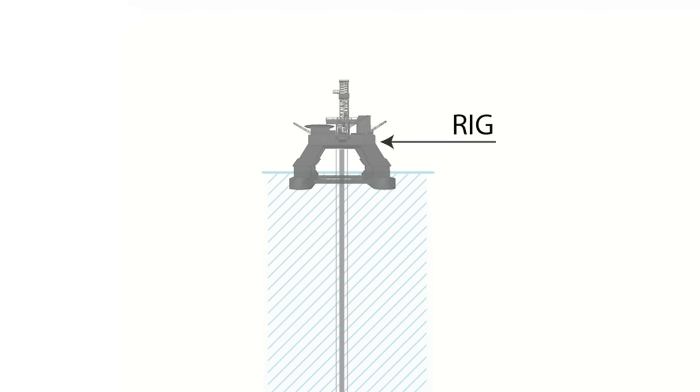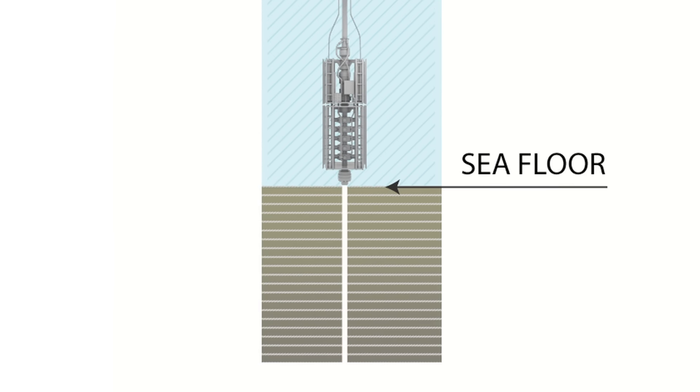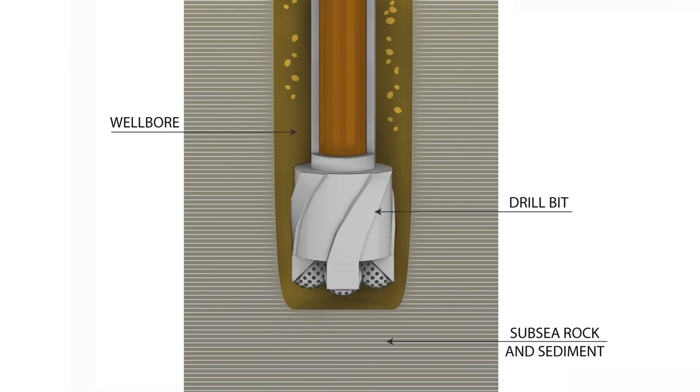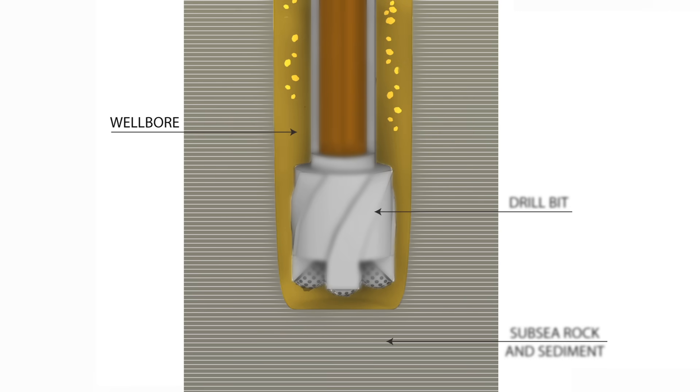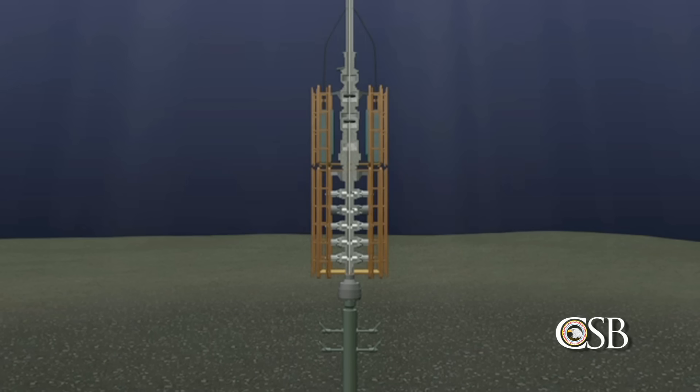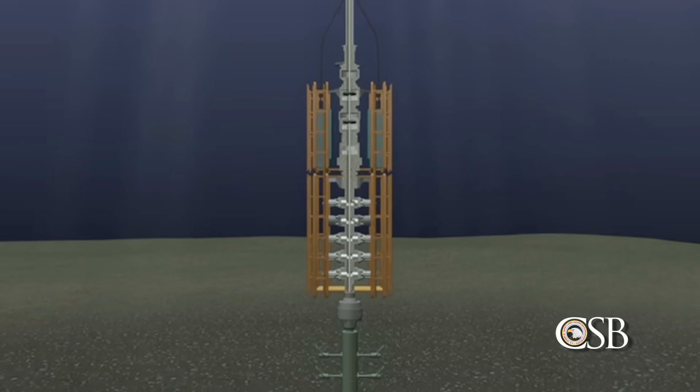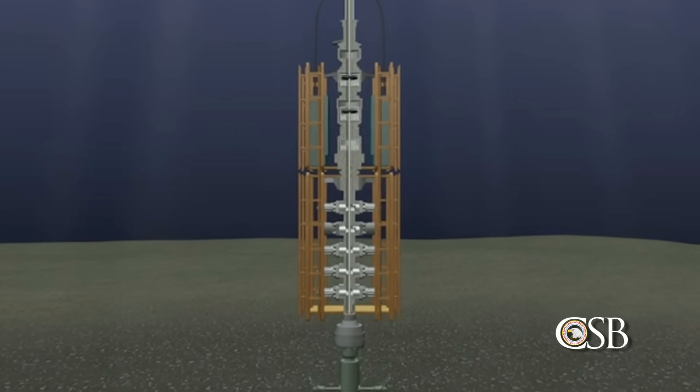Drilling an offshore well involves creating a pathway between the drilling rig and oil and gas reservoirs trapped beneath the sea floor. A deep hole, or wellbore, is drilled through layers of subsea rock and sediment. These rocky layers can contain trapped water, crude oil, and natural gas under pressure. An unplanned flow of these well fluids into the wellbore, known in the industry as a kick, can be dangerous.